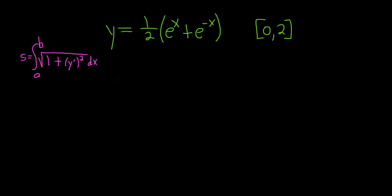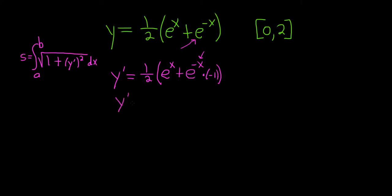We have to start by taking the derivative. So y-prime equals — the 1/2 is a constant, so we leave it out front. The derivative of e to the x is e to the x. The derivative of e to the negative x is e to the negative x times the derivative of the inside, which is negative 1, by the chain rule. So y-prime equals 1/2 times (e to the x minus e to the negative x).